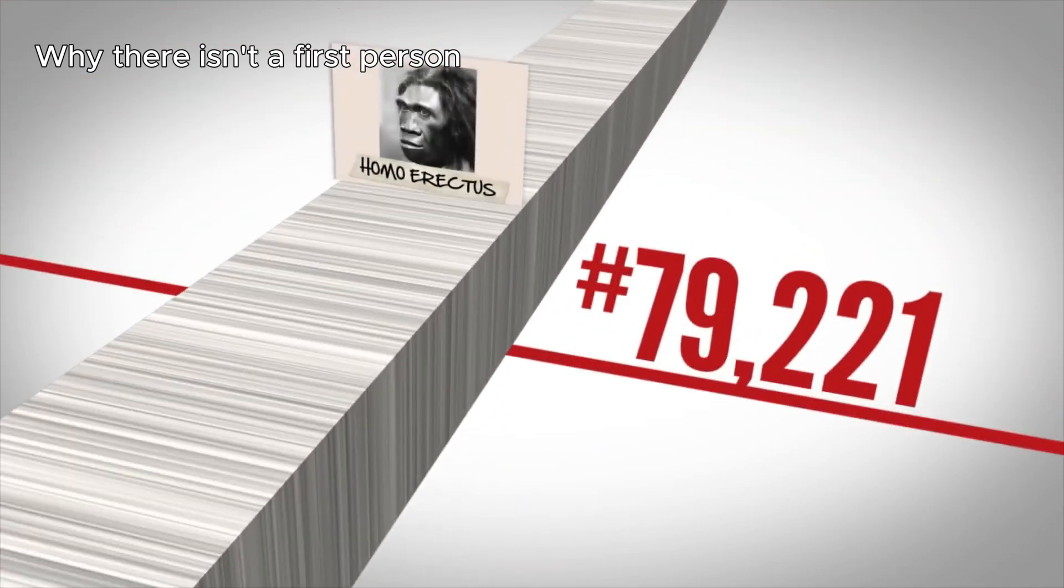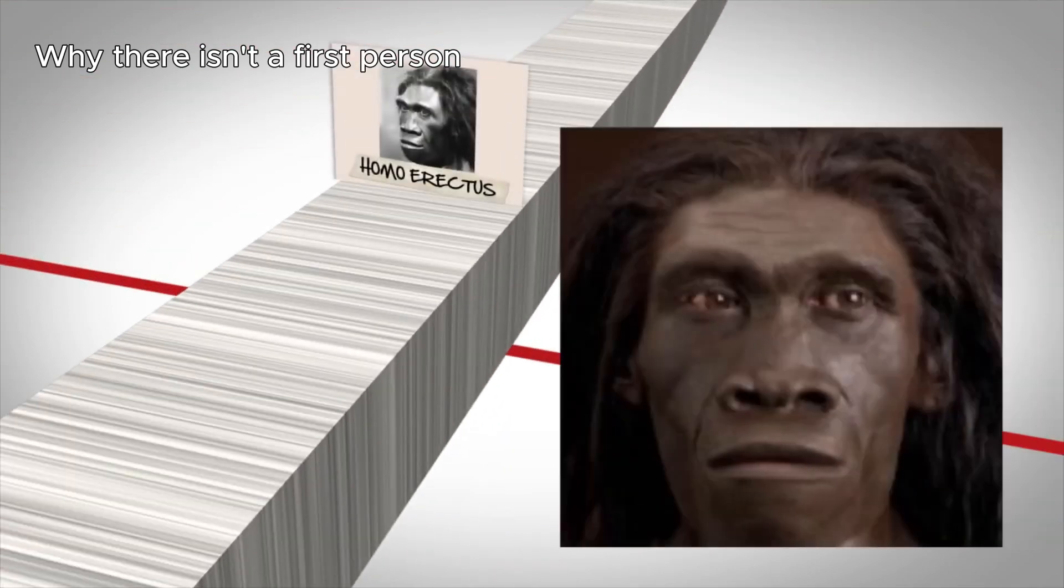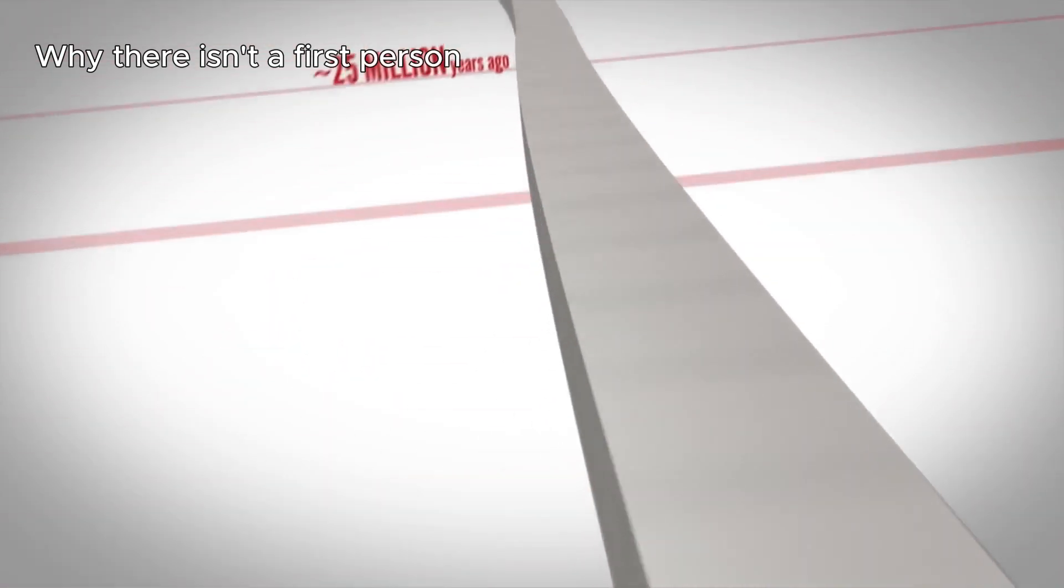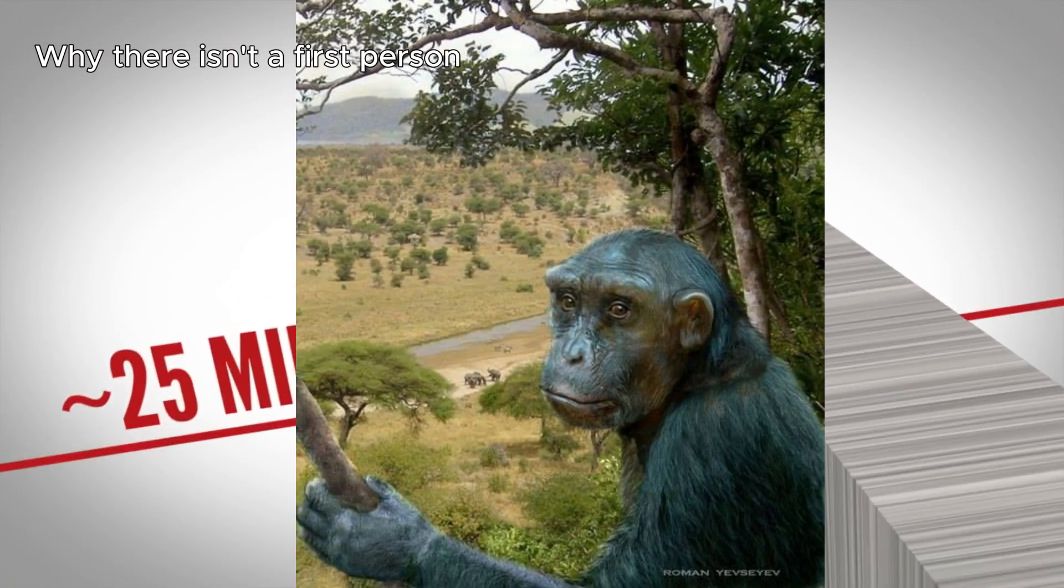A million years ago, you'll find a homo erectus. Now if we go all the way back to six million years ago, you'll find a Sahelanthropus tchadensis. It wasn't a human.